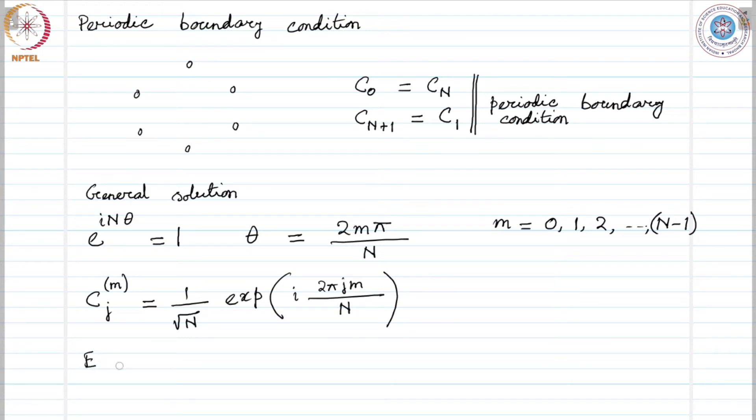If we go to the limit n tending to infinity, you can see that θ represented this way becomes a continuous variable and the eigenvalue will have a continuous spectrum.